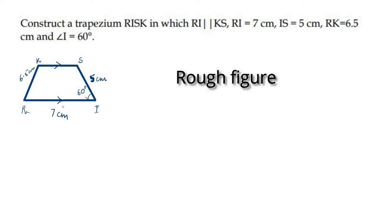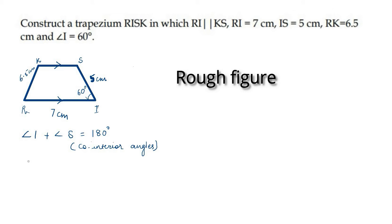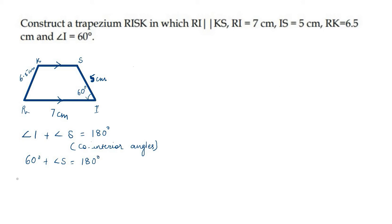Since RI is parallel to KS, angle I plus angle S is equal to 180 degrees because these two angles are co-interior angles. Angle I is equal to 60 degrees. So, 60 degrees plus angle S is equal to 180 degrees. Therefore, angle S is equal to 180 degrees minus 60 degrees, which is equal to 120 degrees.